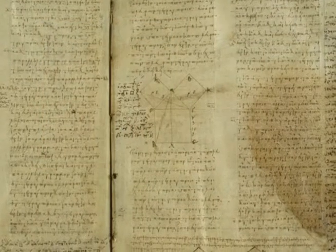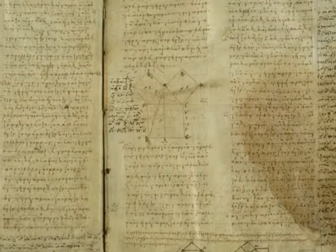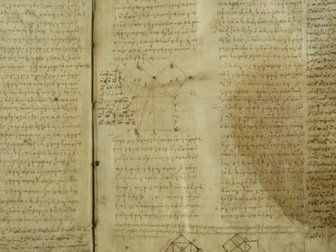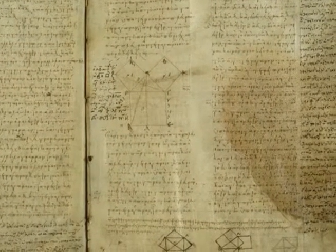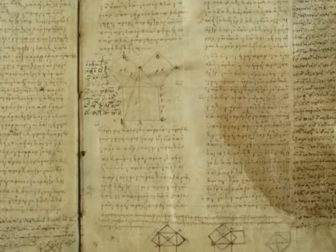This is an 800-year-old Arabic translation of Euclid's original text. His proof is straightforward and succinct, but can be difficult for students to internalize in its written format.